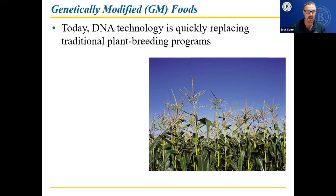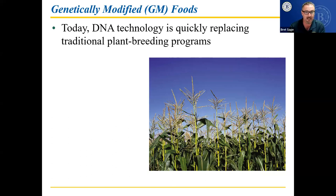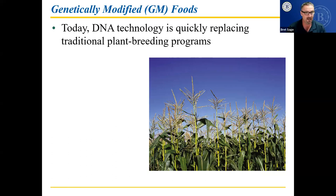Traditional breeding requires a plant that already has a similar feature, and then you breed them together — it takes time. When you have a particular gene from whatever organism and put it directly into the plant, you instantly have your fix. As long as the plant uses that inserted gene to make the protein you want, and provided putting that gene in doesn't cause problems in terms of food safety — that's been an issue we've struggled with for decades.